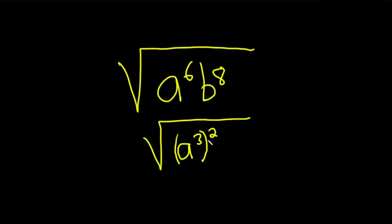And then b to the eighth, we can write that as b to the fourth squared. And that also looks okay because two times four is eight.